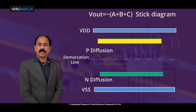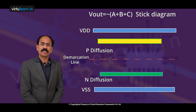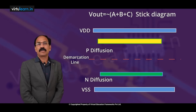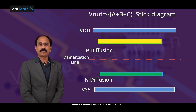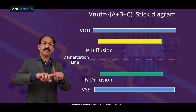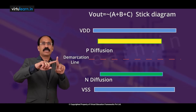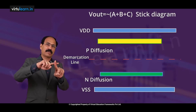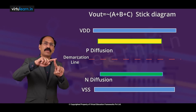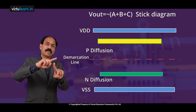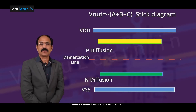For P-MOS transistors we have taken yellow diffusion, and for N-MOS transistors we have taken green diffusion — N-plus diffusion. Now for polysilicon, whenever we have crossing of N-plus diffusion with polysilicon, we get a transistor. Similarly, whenever we have P diffusion crossing, overlapping with polysilicon, we get P-MOS transistors.